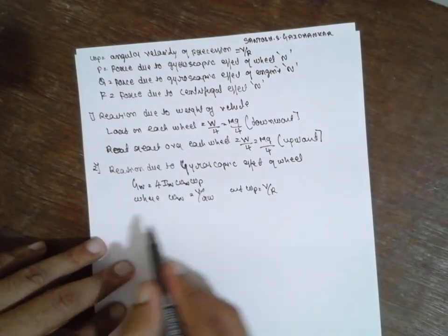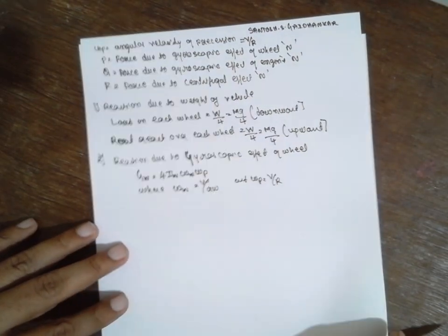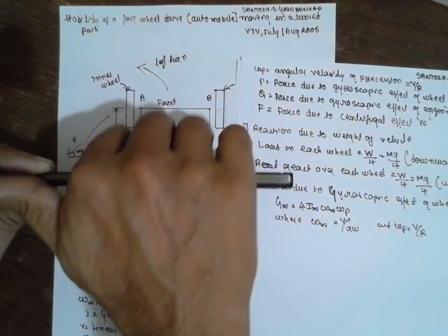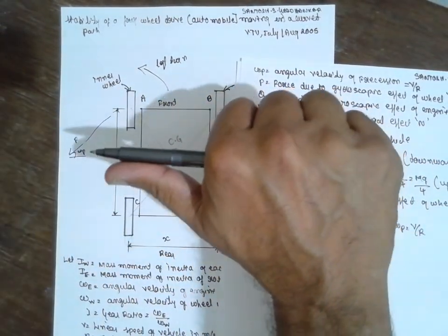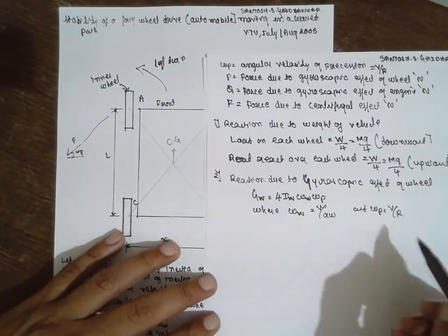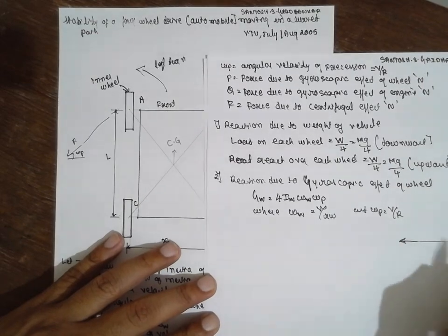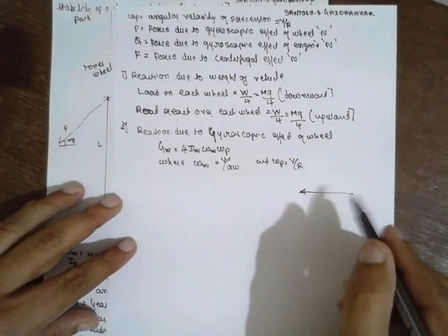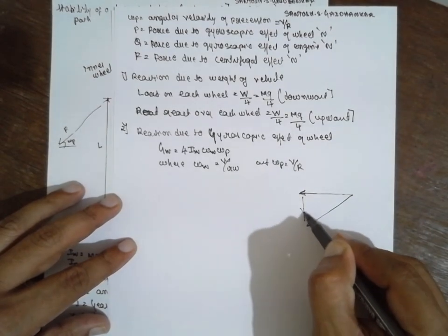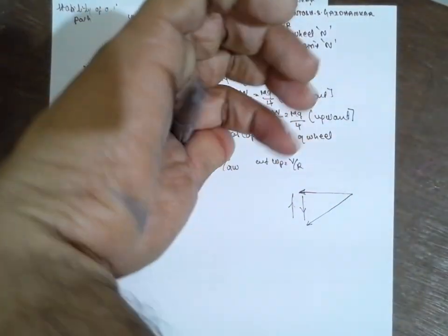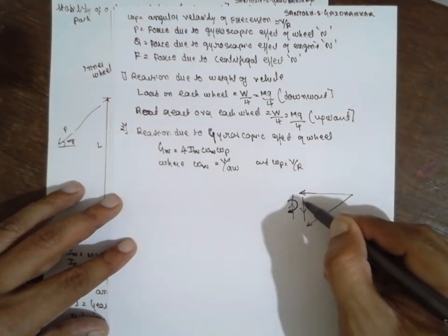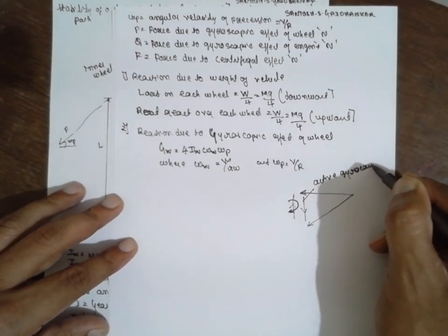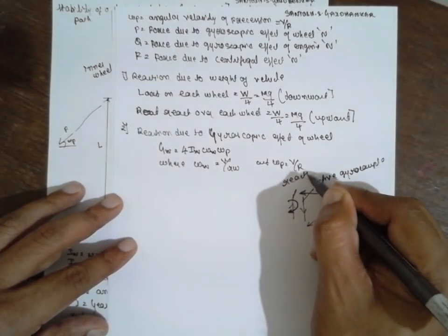As the vehicle moves in the forward path, the wheel is rotating in this direction. Holding the pen to indicate — the thumb indicates the direction of the wheel. As it takes a left turn, the active gyroscopic couple acts in this direction and the reactive gyroscopic couple acts in the opposite direction.